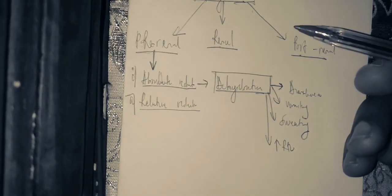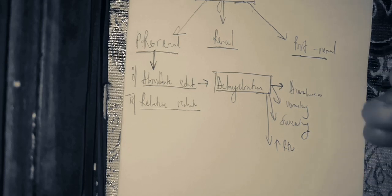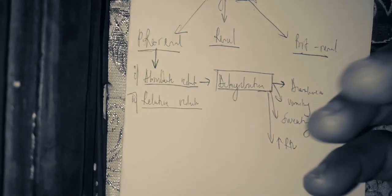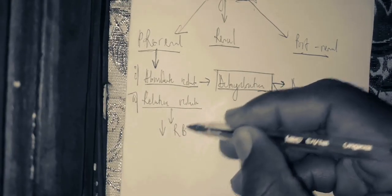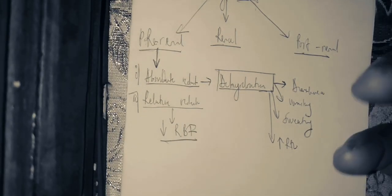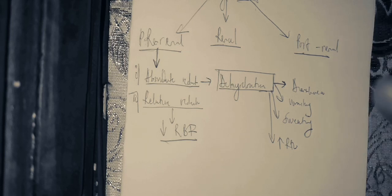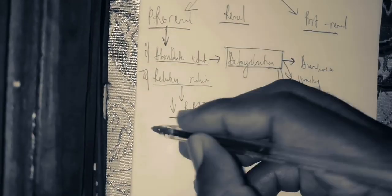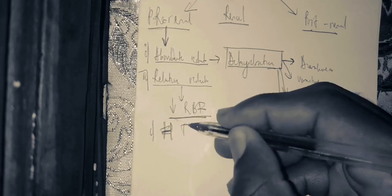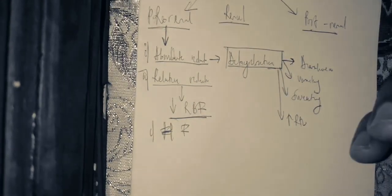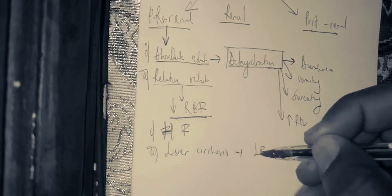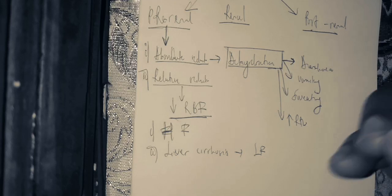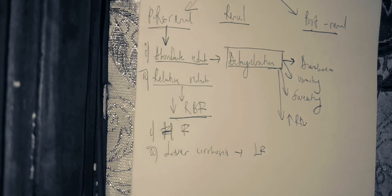Relative hypovolemia is not actually a reduction in blood volume, but rather a reduced renal blood perfusion even though the total blood volume is constant. The first cause is heart failure. The second is liver cirrhosis, which is associated with hypoalbuminemia, causing low oncotic pressure of blood and reducing the plasma volume.